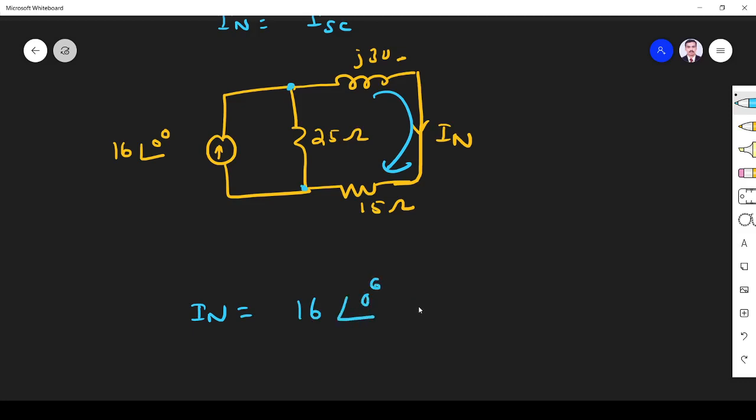Total current 16∠0°. Opposite terminal resistance, so opposite terminal is 25, divided by sum of the resistance. Opposite terminal resistance is 25. The current flowing through the required terminal is 15 plus j30.